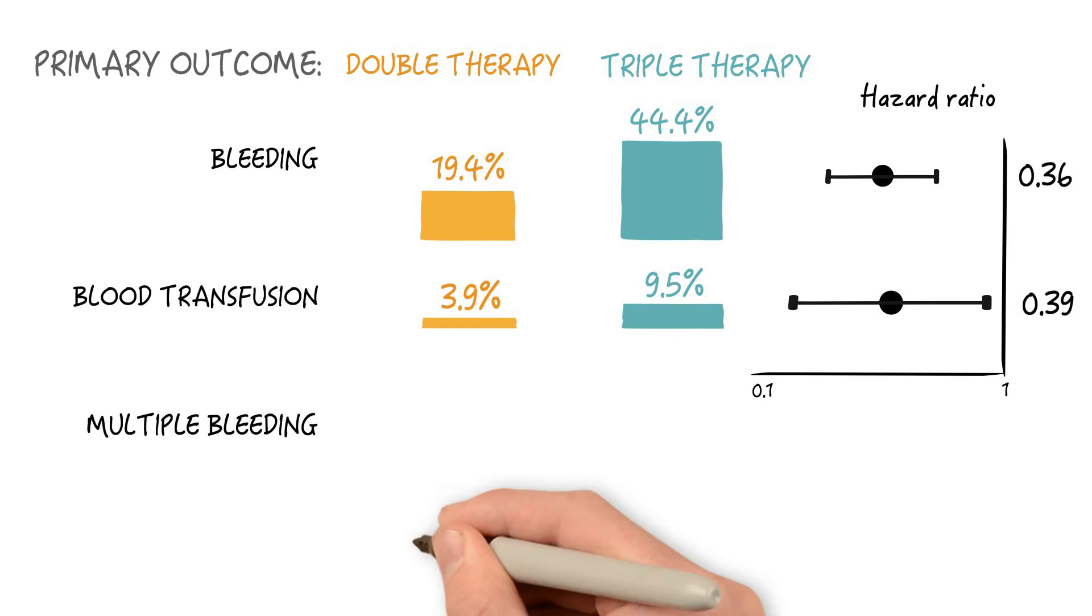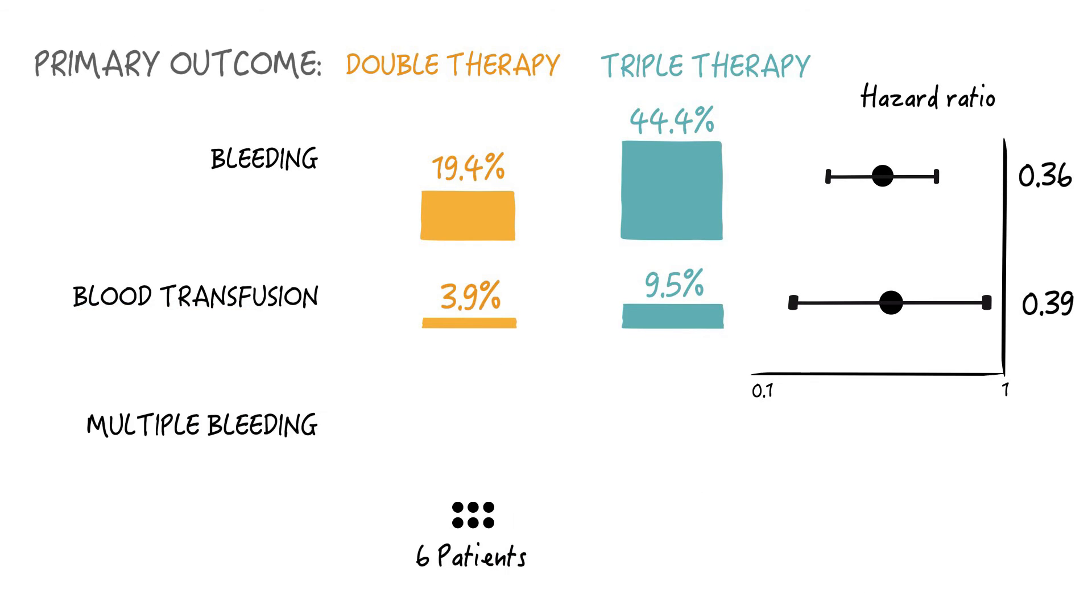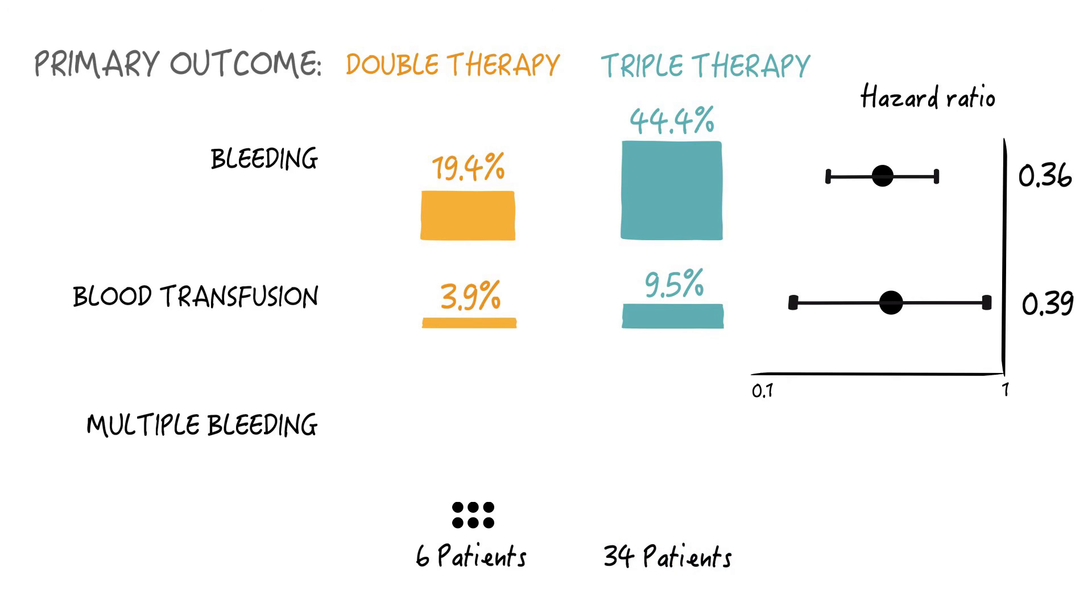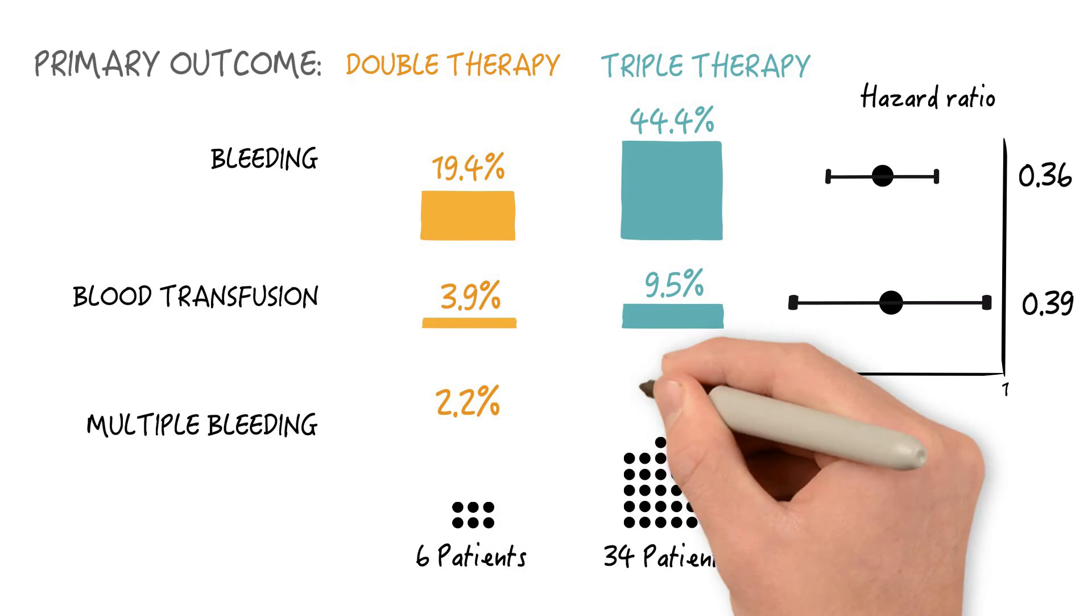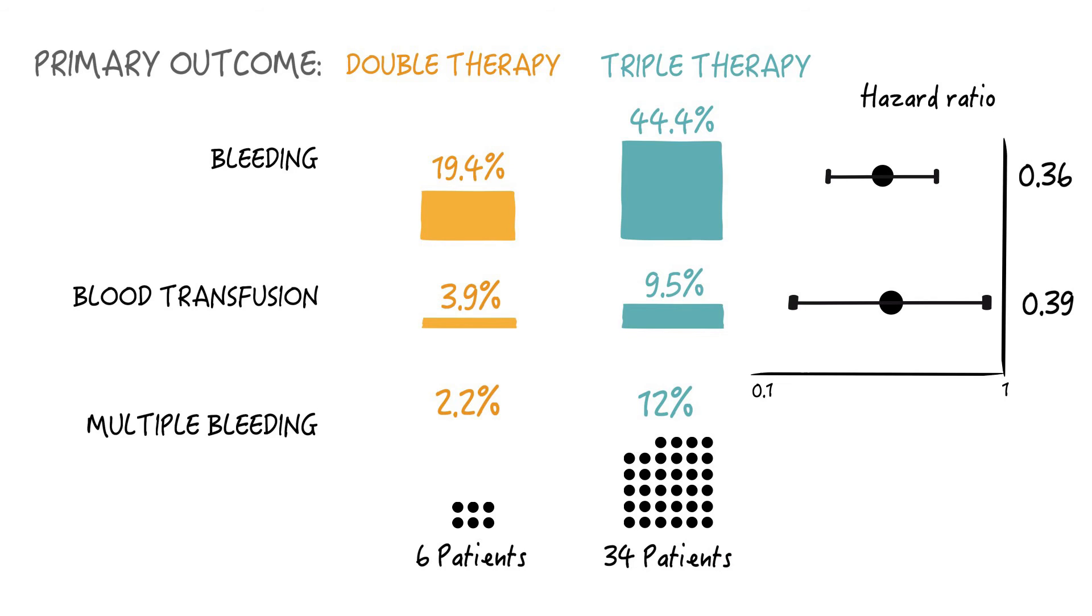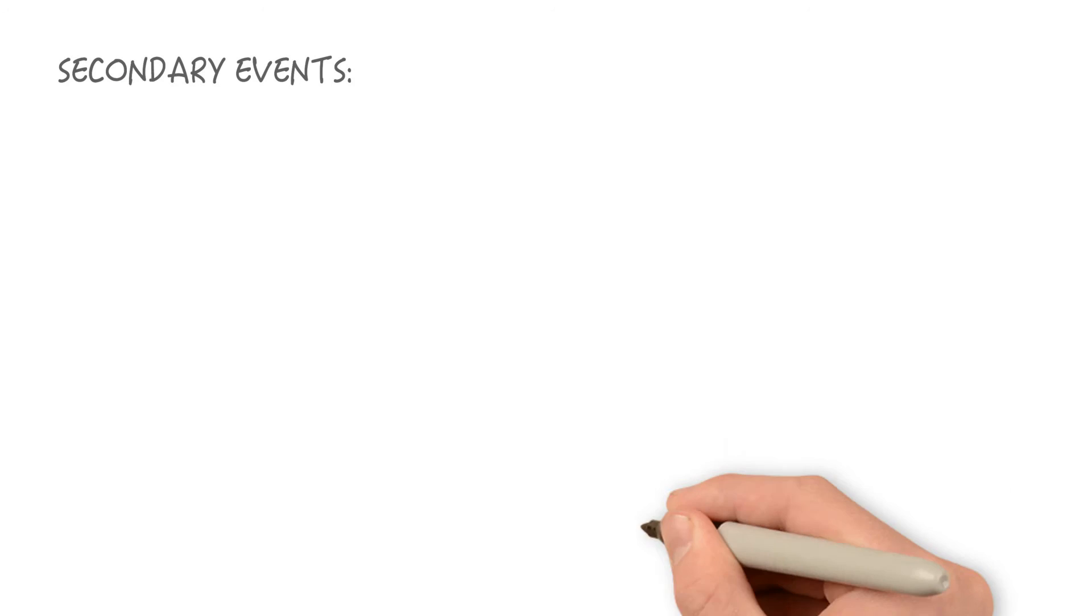Multiple bleeding occurred in 6 patients in the double therapy group versus 34 patients in the triple therapy group. So 2.2 versus 12%. So overall, the double therapy group looks much better when it comes to bleeding as compared to the triple therapy group. That was kind of expected, right? But what about the ischemic events and mortality overall? That was assessed in the study's secondary event or secondary outcome.